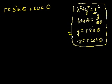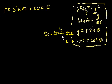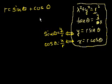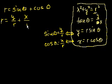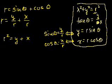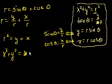From the toolkit, dividing both sides of y equals r sine theta by r gives sine of theta equals y over r. Similarly, cosine of theta equals x over r. Substituting back: r equals y over r plus x over r. Multiplying both sides by r gives r squared equals y plus x. Since r squared equals x squared plus y squared, we get x squared plus y squared equals y plus x.